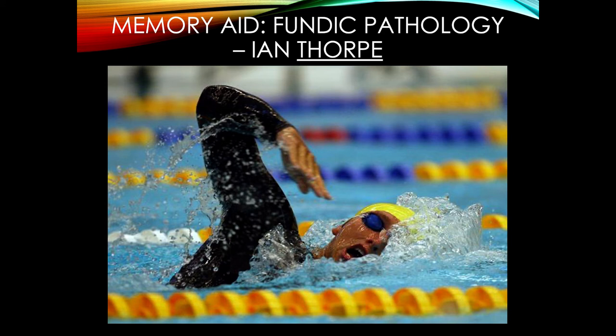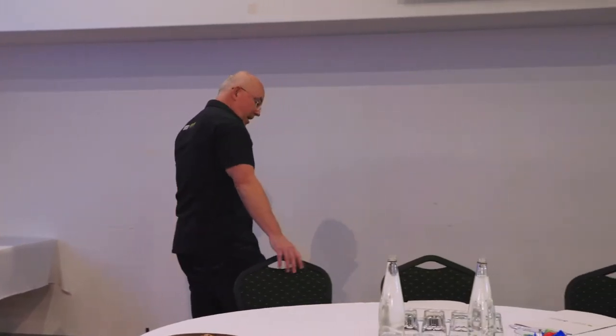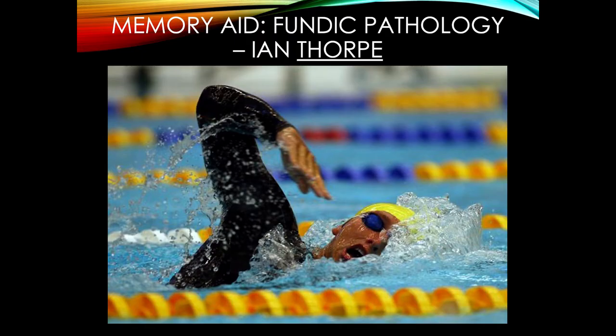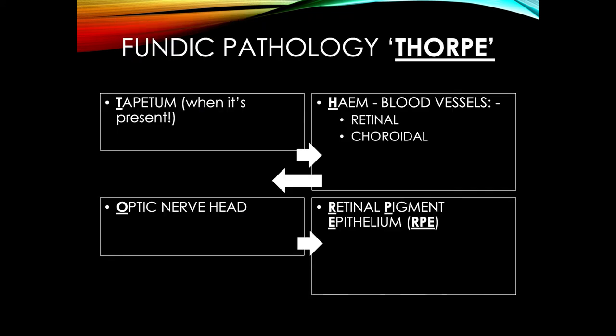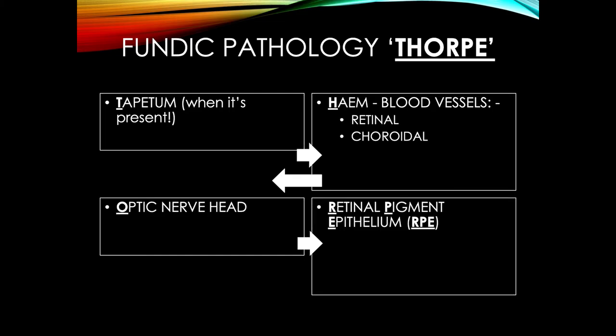I try and do mnemonics to help you remember. With THORPE: T for tapetum, H for heme, O for optic nerve, and RPE is the retinal pigment epithelium. In terms of pathology, if you remember Ian THORPE, those letters will give you a clue to put something in context.